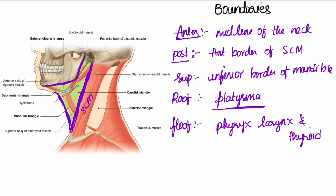To summarize: the posterior border is formed by the anterior border of the sternocleidomastoid muscle, the anterior border by the midline of the neck, the superior border by the inferior border of the mandible, the roof by the platysma muscle, and the floor by the pharynx, larynx, and the thyroid.